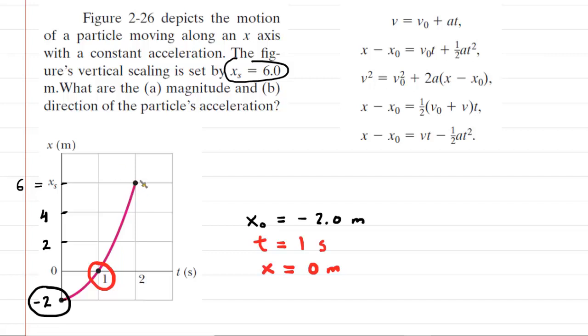And then the other point we wish to investigate is this point right here. That is a time of 2 seconds. And at that time, the final position of this particle is going to be the 6 meters. So we can say x is equal to 6 meters.